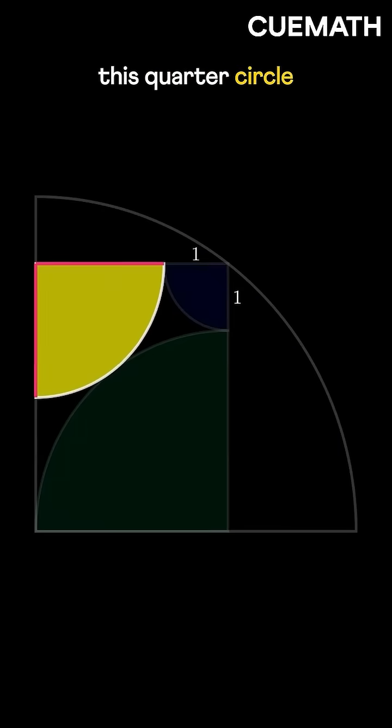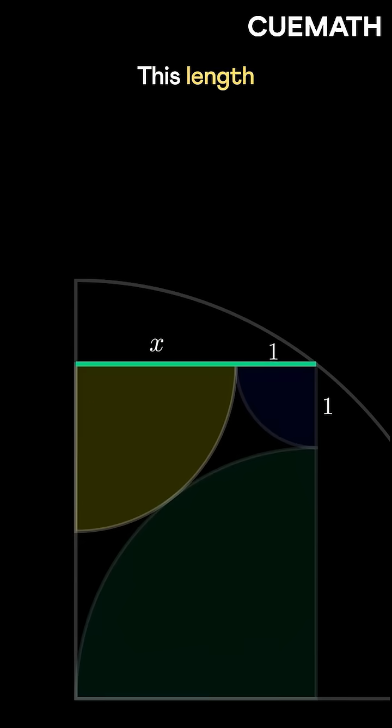Say the radius of this quarter circle is x units. This length becomes x plus 1.